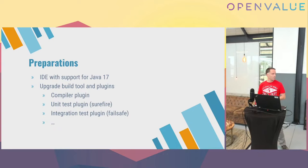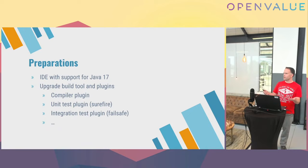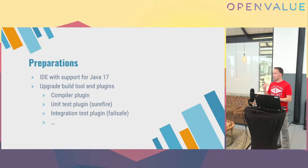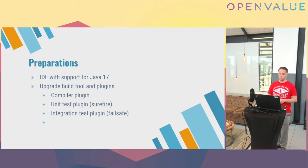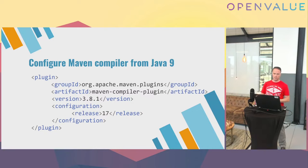Make sure you have an IDE with proper support for the latest version of Java. You don't even need support for new language features — first we just make sure it compiles with the new version. Also make sure to upgrade your Maven compiler or Gradle compiler and all plugins to run on the latest version of Java, not some older version, because otherwise on the build server you'll find out it still breaks. Since Java 9, in Maven you only need to configure the release version.